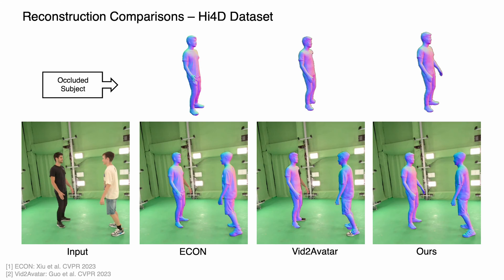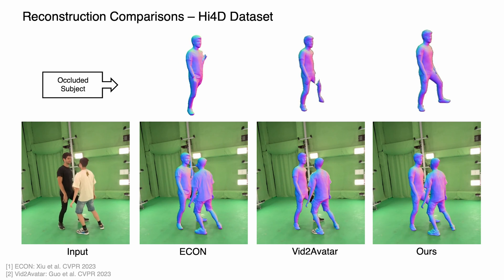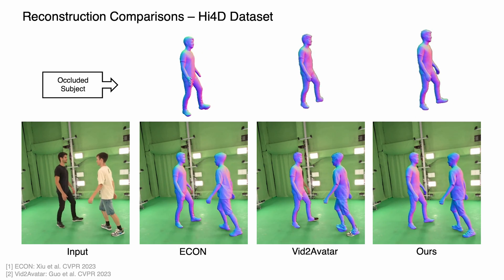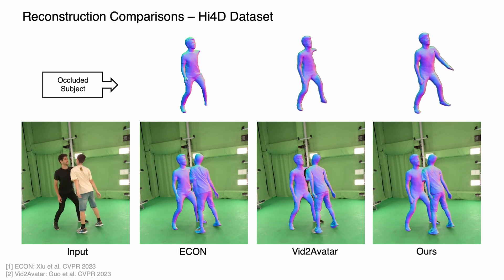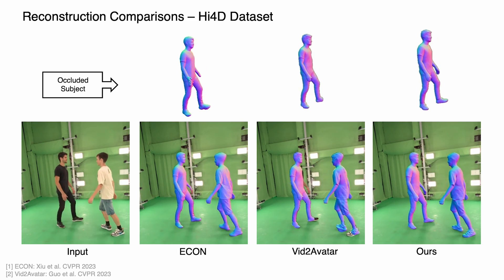We compare our method with existing state-of-the-art approaches for the task of 3D human reconstruction. We first show a comparison on the HI-4D dataset. Both baseline methods struggle to recover complete human bodies when people closely interact. In contrast, our approach produces detailed and complete human surfaces with temporal consistency.